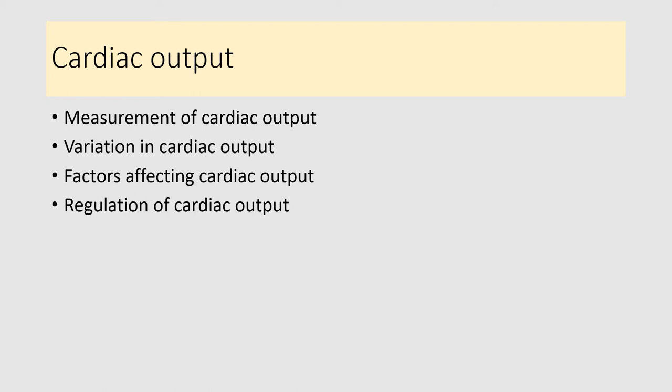In this lecture I will explain about the measurement of cardiac output — brief information about measurement for experimental purposes as well as measurement in clinics. It is also essential to understand variation in cardiac output in physiological as well as pathological conditions. These topics are important for viva as well as practicals. I will also explain factors affecting cardiac output and regulation of cardiac output. The remaining topics will be covered in other lectures.